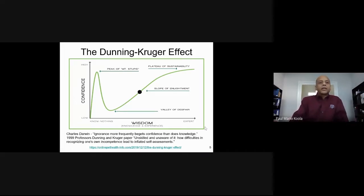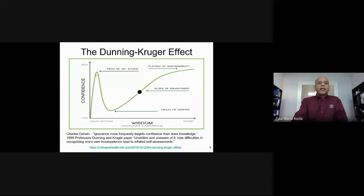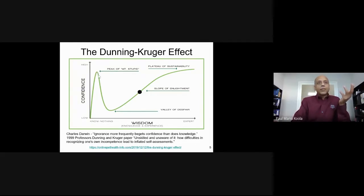Charles Darwin said that ignorance more frequently begets confidence than knowledge. Research by Dunning and Kruger confirms this. On the x-axis is knowledge and experience; on the y-axis, confidence. When you know nothing, you think you know a lot. The best way to remember this: when you finish your bachelor's degree is when you think you know everything. When you start your master's is when you come down that slope and realize you know nothing.